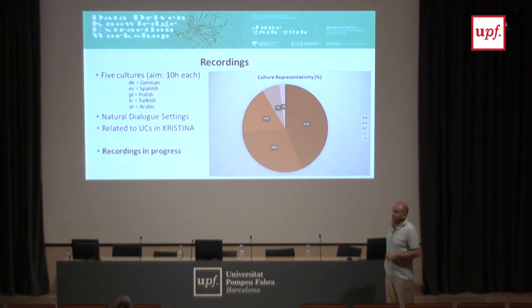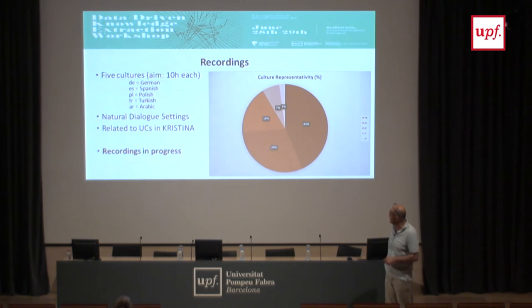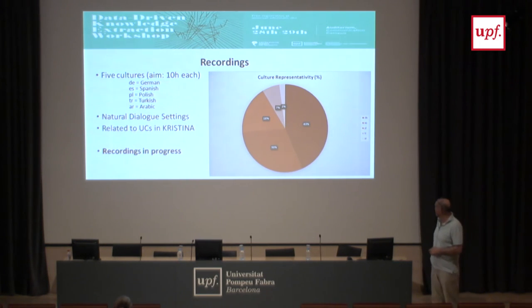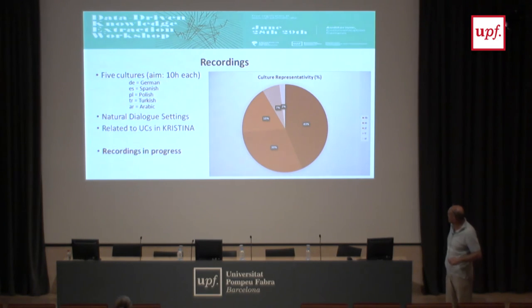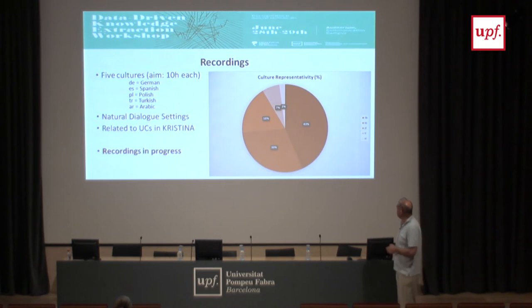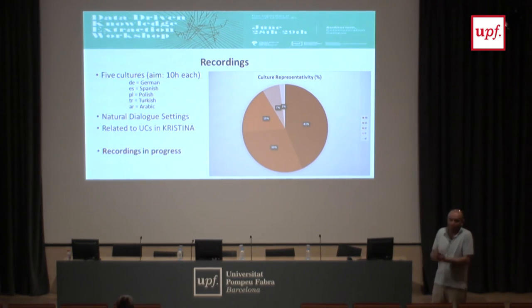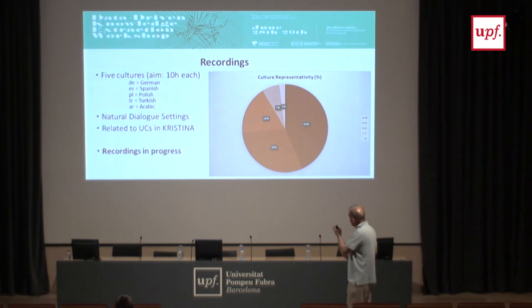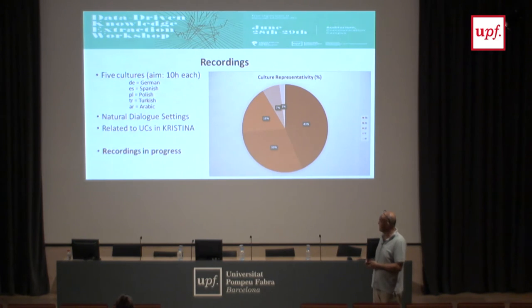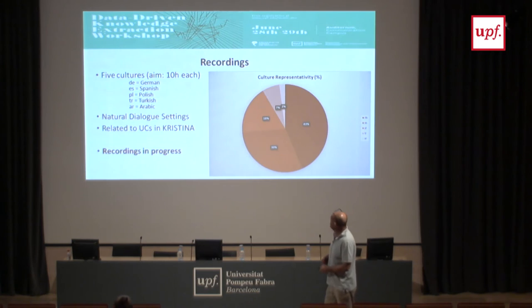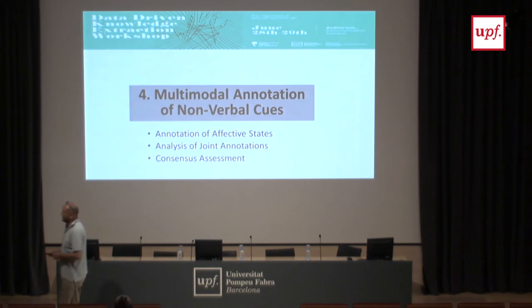The corpus we are working on consists of recordings in five different languages — German, Spanish, Polish, Turkish, and Arabic — assuming each language represents a culture, to cover all the use cases. Currently, German has the most recordings, followed by Spanish, then Polish, Turkish, and Arabic. Recordings are still in progress; the goal is 10 hours per language, which is quite a lot of material compared to what is typically available.